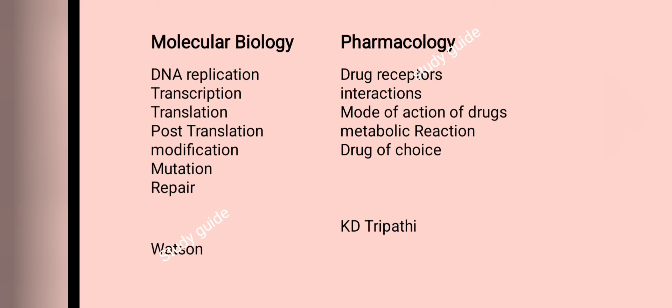In molecular biology, important topics include DNA replication in prokaryotic and eukaryotic cells, transcription in prokaryotic and eukaryotic cells, translation in both, and some post-translational modifications such as ubiquitination, acetylation, and histone modifications. The types of mutations and repair mechanisms used by the cell are also important. The recommended book for this is Watson's Molecular Biology of the Gene.